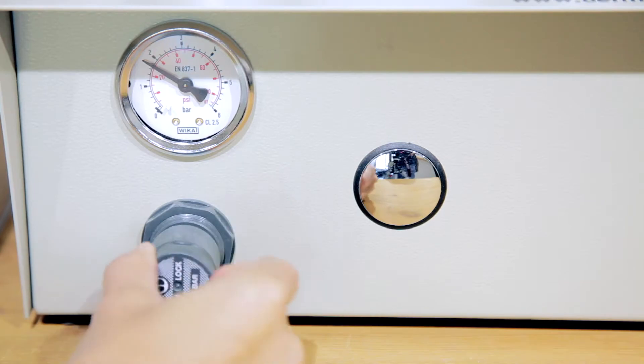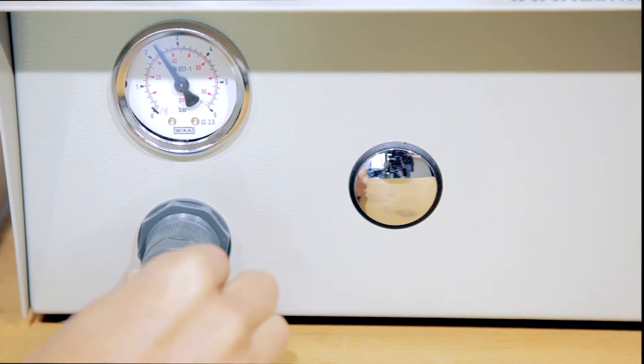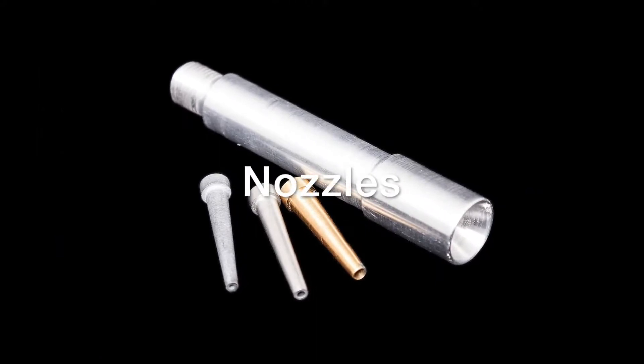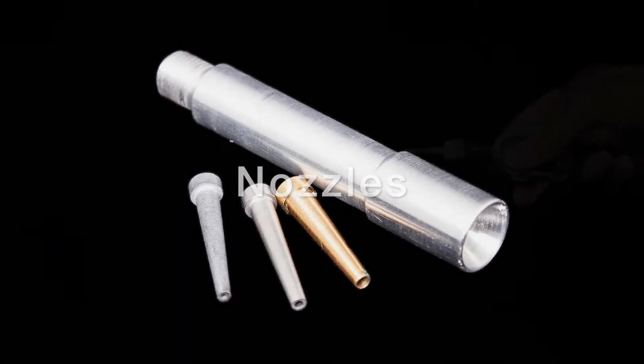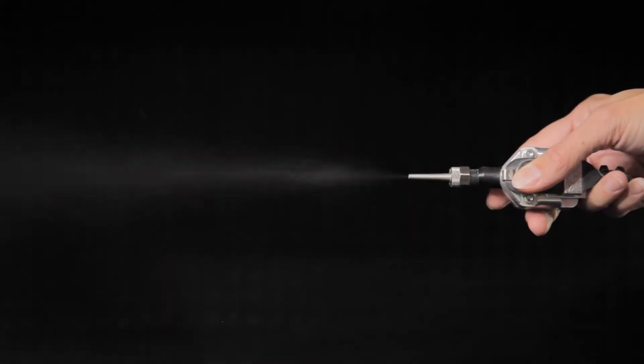After filling, the pressure, depending on the individual object, should be set to 1.8 to 2.2 bar. The air blaster supports four different nozzles. The nozzles differ in diameter, which in turn defines the amount of particles blown through the nozzle.